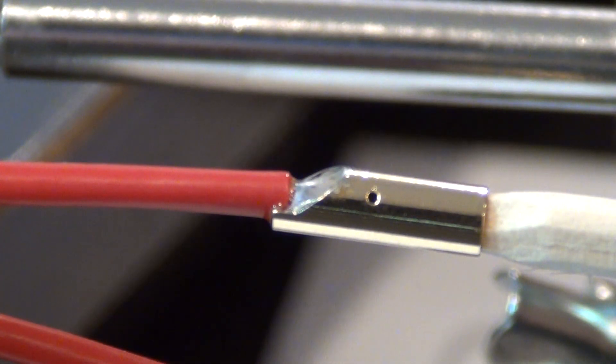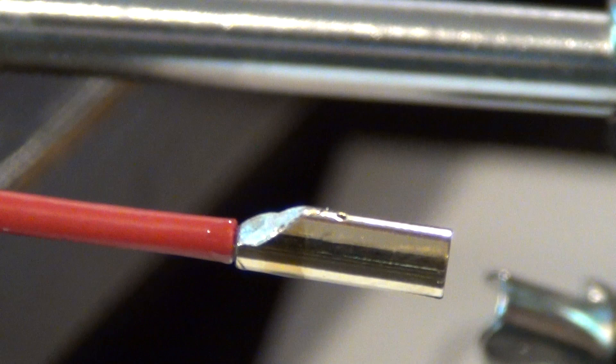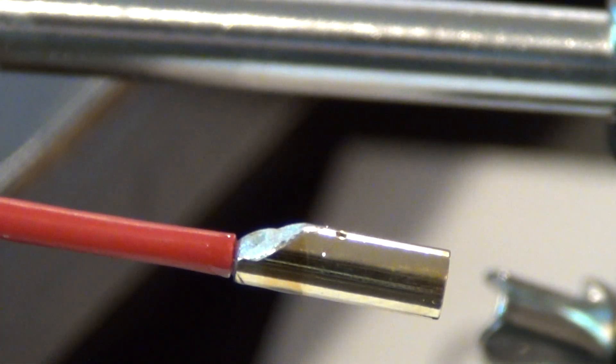And as you can see here, this is very quick. It heats up very quick. Very nice thing. So then we need to get the shrink wrap over there, the shrink tube.